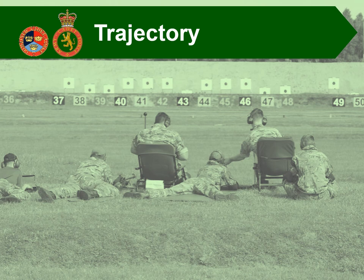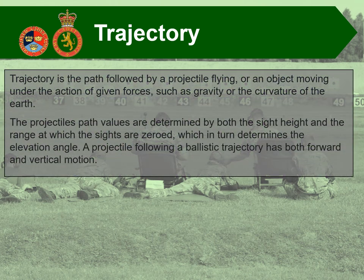Before looking at verniers and the sight system, we're going to have a look at trajectory to give everyone a better understanding of how the bullet works. Trajectory is the path followed by a projectile flying or an object moving under the action of given forces such as gravity or the curvature of the earth. A projectile's path values are determined by both the sight height and the range at which the sights are zeroed, which in turn determines the elevation angle.